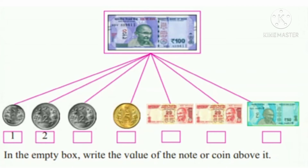The change includes: 1 rupee coin, 2 rupees coin, 2 rupees coin again, then 5 rupees, 20 rupees note, one more 20 rupees note, and one 50 rupees note. So all this change together makes 100 rupees.